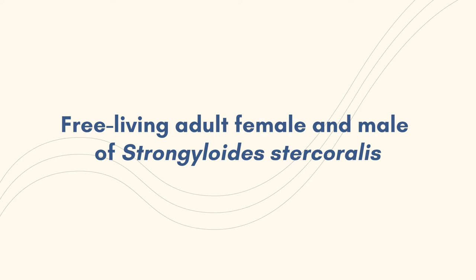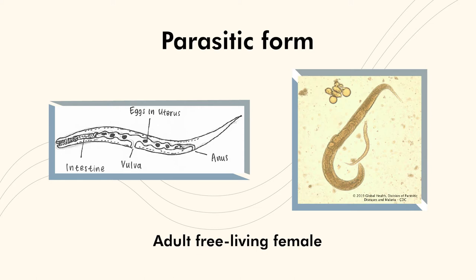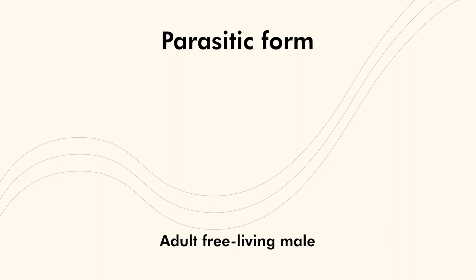The free-living form includes both female and male adult Strongyloides stercoralis. The free-living adult stages are approximately 1 mm in length, with the female slightly larger than the male. Free-living female nematodes have uterine at the posterior end of the nematode containing more eggs than the parasitic females, which have their uterine located more equatorially.